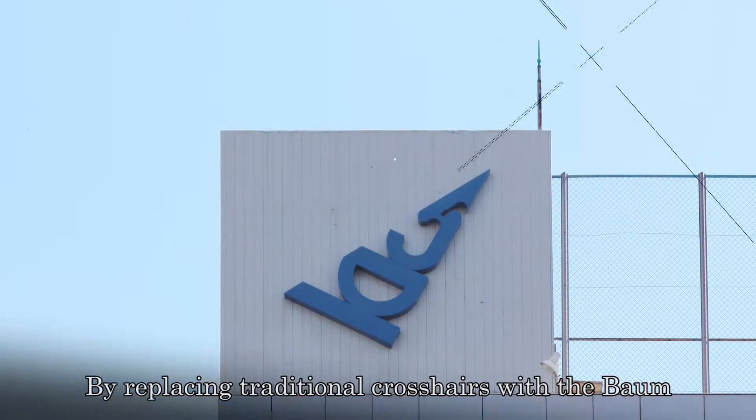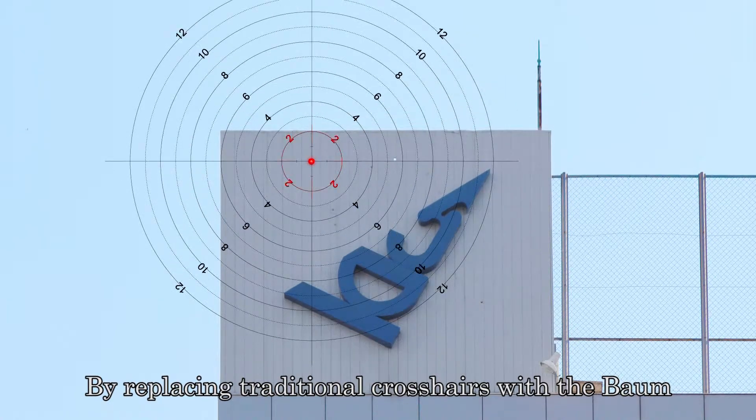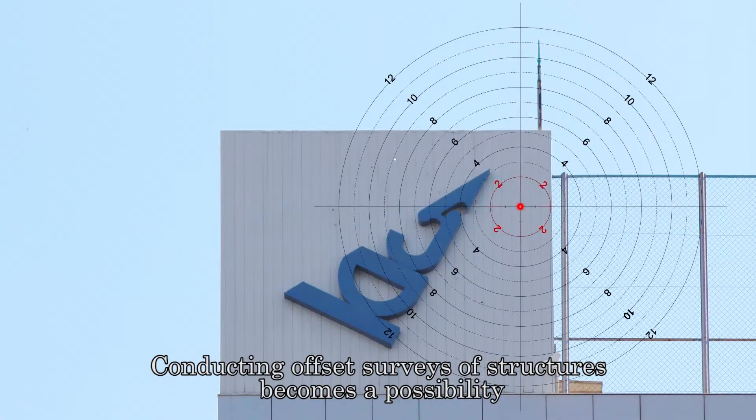By replacing crosshairs with the Baum, conducting offset surveys of structures becomes a possibility.